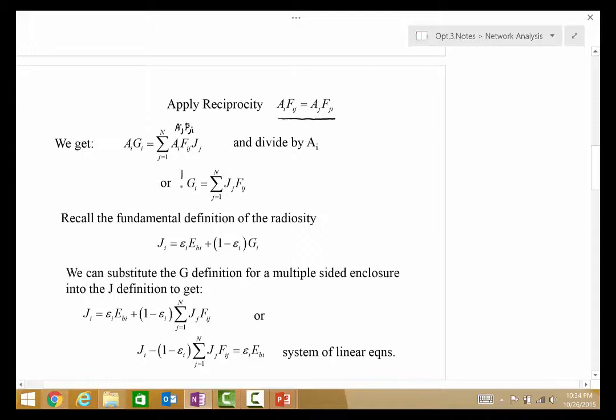So, this says the GI, the incident radiation on surface I, is dependent on the sum of the radiosities of surfaces J times the, interestingly enough, view factor from I to J.